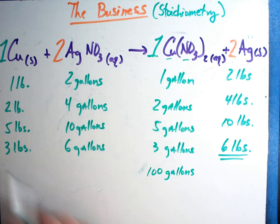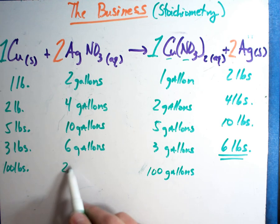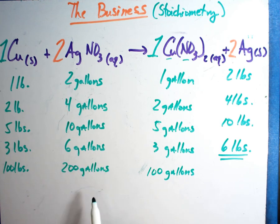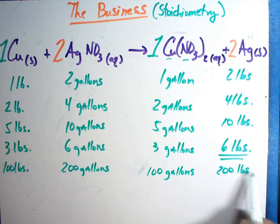Well if I need a hundred gallons of this, one to a hundred, that means I need a hundred pounds of copper to start with. I need two hundred gallons. They start asking questions about all this film developer. Don't tell them because we're going to make a lot of money. We're going to end up getting two hundred pounds of silver to sell. So now we're selling both of our products.